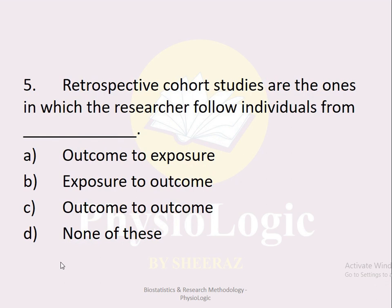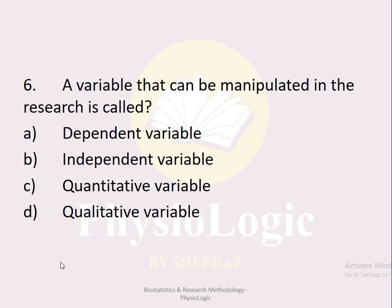MCQ number five: Retrospective cohort studies are the ones in which the researcher follows individuals from: option a outcome to exposure, option b exposure to outcome, option c output to outcome, option d none of these. The correct option is option a, outcome to exposure. Cohort studies are longitudinal studies — if we follow from exposure to outcome it is a prospective cohort study; if from outcome to exposure, it is a retrospective cohort study.